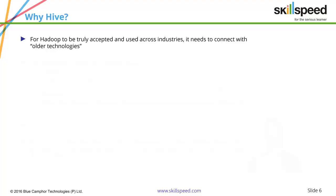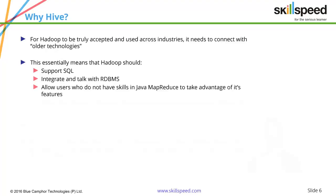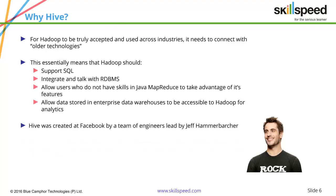For Hadoop to be truly accepted and used across industries, it needs to connect with older technologies. Whether you work in a small or large company, there is always a huge demand for database developers, and most production engineers are familiar with SQL or RDBMS. Java or MapReduce is not so popular and adaptable, so for wider adaptability of Hadoop, something that looks like SQL was a must. Hive creates a data warehousing repository on Hadoop and allows you to query the data through a much more familiar interface.